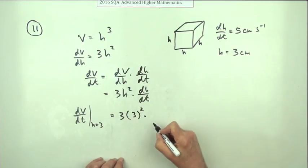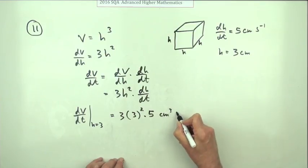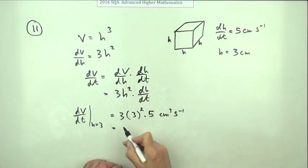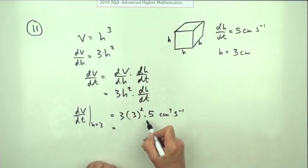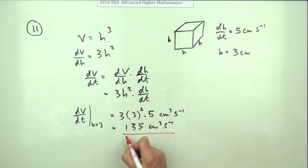And the rate for dh/dt is 5, and that'll be centimeters squared times centimeters, which is centimeters cubed per second. So it's just a case of what does that come to - 27 multiplied by 5 is 135 centimeters cubed per second.